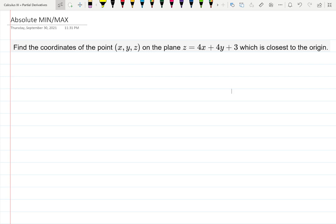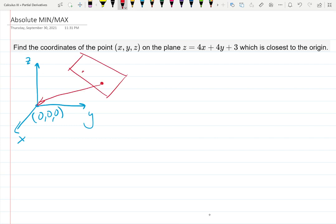In this video, let's find the coordinates of the point on the plane z equals 4x plus 4y plus 3 which is closest to the origin. Here's my origin at coordinates (0,0,0), and the plane. Which point on the plane gives us the closest point to the origin? We are going to be minimizing this distance, so it's a global minimum problem.